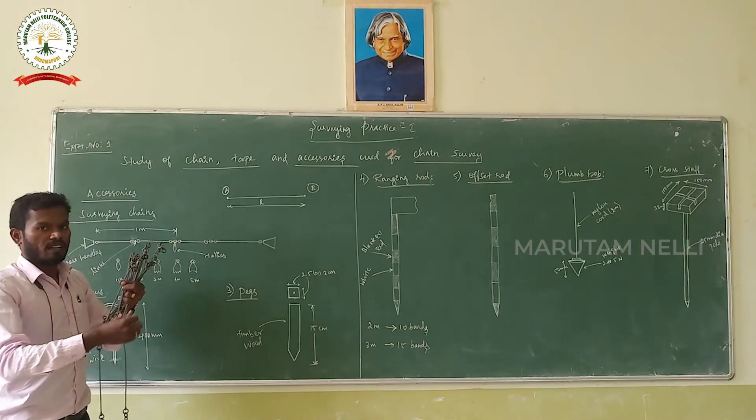This is the open cross-staff. If you press the rod and open it, you will see what you do. This is the 0-degree line. We will use the straight line. This is the open cross-staff. This is the first experiment we will do. This is the study experiment.